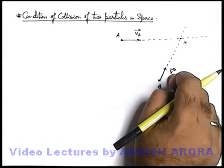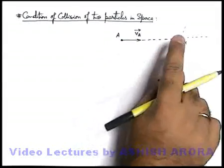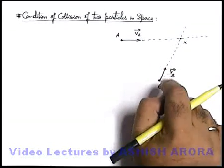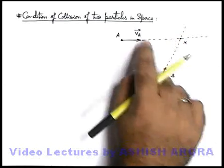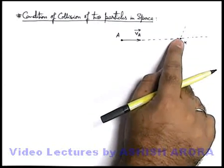The two particles may or may not collide at X depending on their velocities, or more precisely we'll say, if the time taken by A to reach X and the time taken by B to reach X are exactly the same, then they are going to collide at X.